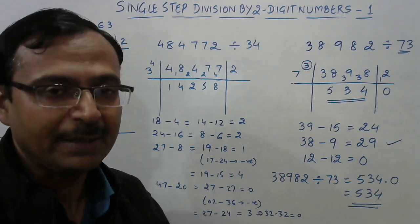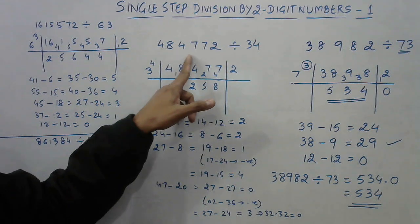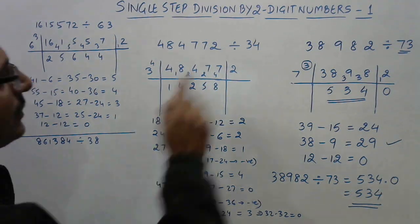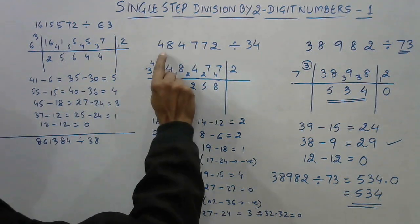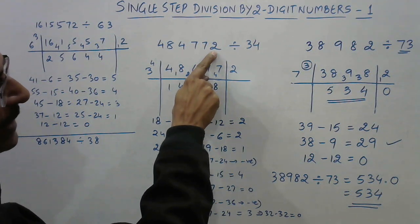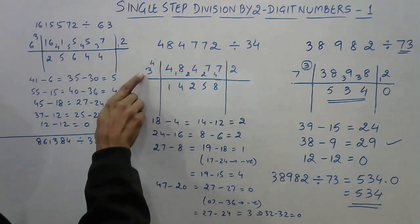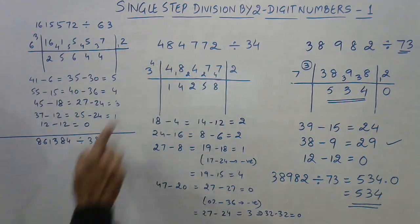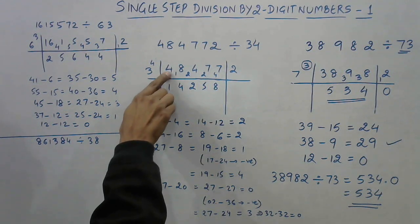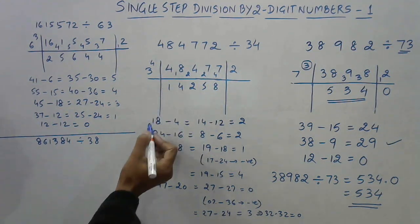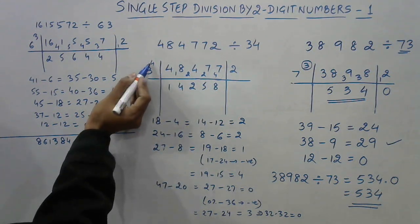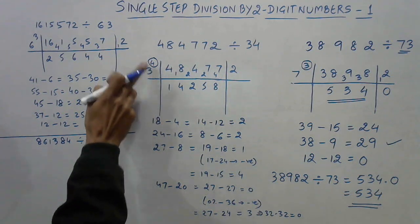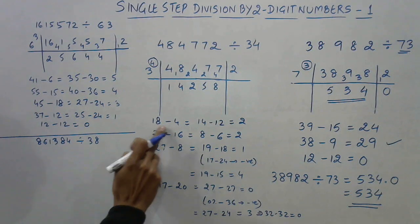A little complicated, I understand, but practice makes a man perfect. Let's see the next question: 484772 divided by 34. Now understand this logically. 34 means 3 is written here and 4 is separated out. Likewise, one digit is separated from the right-hand side of the dividend, giving dividend part 48477. Three ones are 3, and 4 minus 3 is 1, so the first quotient digit is 1. The next step: 18 minus 4 times the previous quotient 1, which is 4, gives 14.